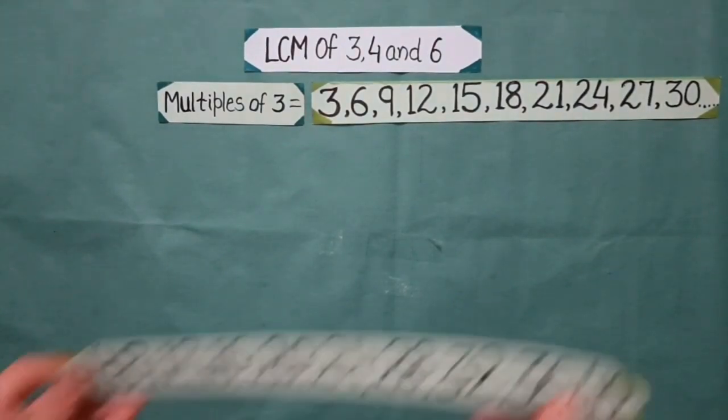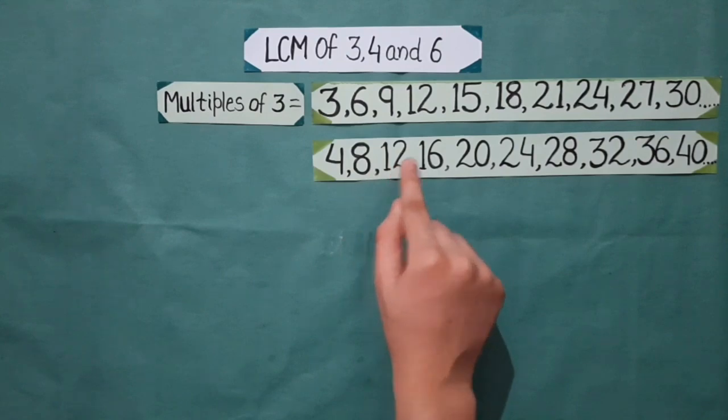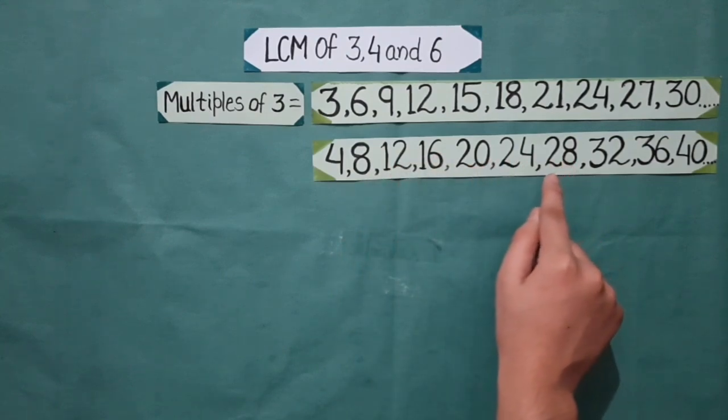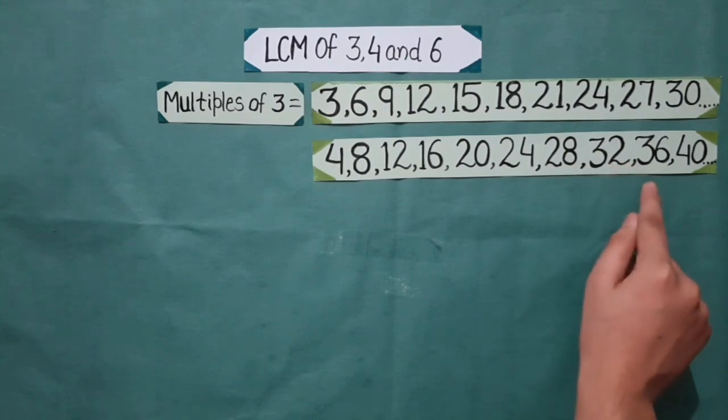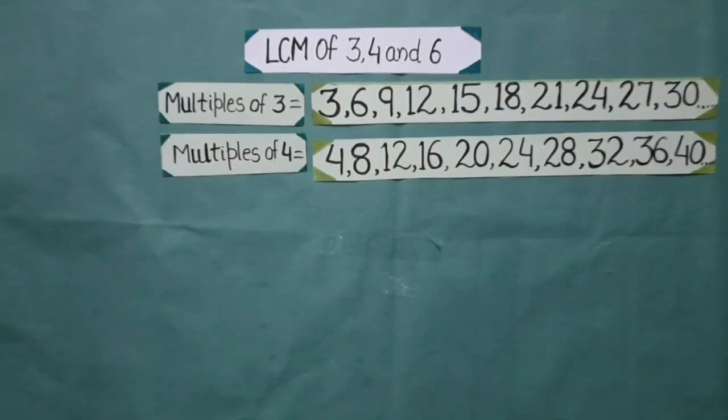Now, where the red bindis were placed: 4, 8, 12, 16, 20, 24, 28, 32, 36 and 40 and these numbers are multiples of 4.